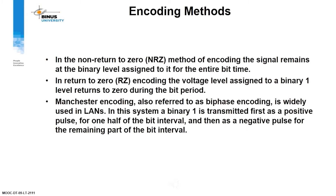Encoding methods: In the Non-Return to Zero (NRZ) method of encoding, the signal remains at the binary level assigned to it for the entire bit time. In Return to Zero (RZ) encoding, the voltage level assigned to a binary one returns to zero during the bit period. Manchester encoding, also referred to as biphase encoding, is widely used in local area networks. In this system, a binary one is transmitted first as a positive pulse for one half of the bit interval and then as a negative pulse for the remaining part of the bit interval.